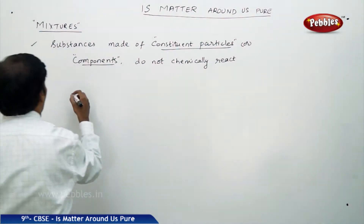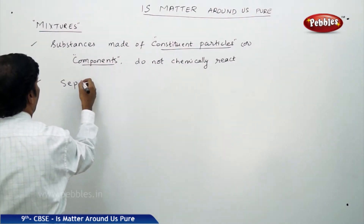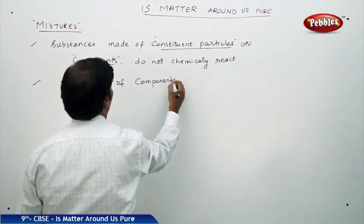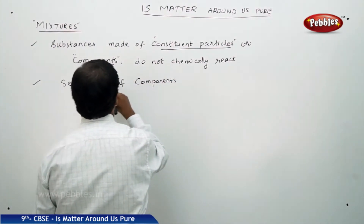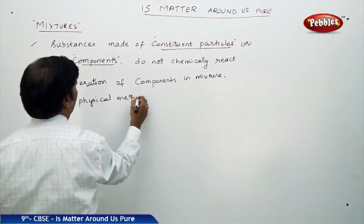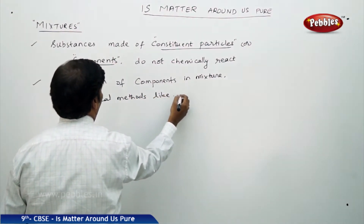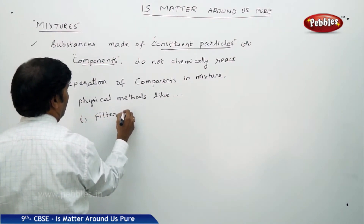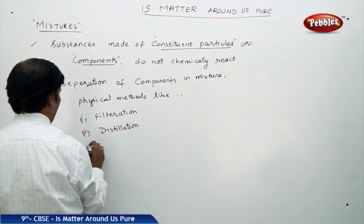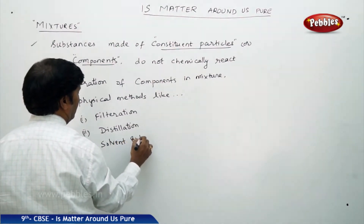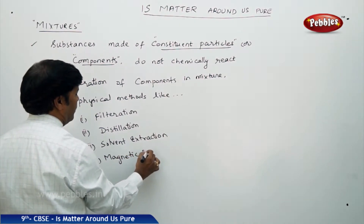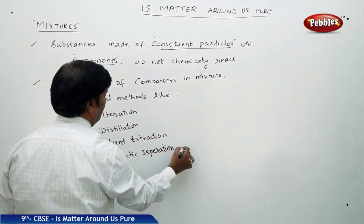If you go to the mixtures, they can be separated. Separation of the components or the substances in the mixture can be done through physical methods like filtration, distillation, solvent extraction, magnetic separation, and so on and so forth. These are the simple methods.